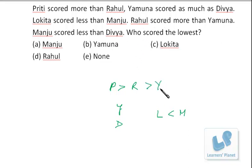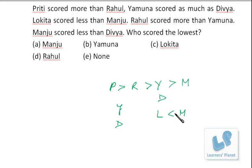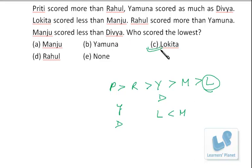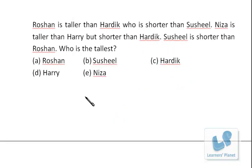Rahul scored more than Yamuna, and Yamuna is on par with Divya. Manju scored less than Divya, so Manju comes after them. Manju scored more than Lokita, so we get the order. Who scored the lowest? That is L — Lokita. Quite a simple problem.